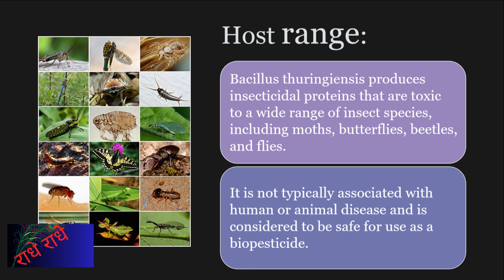Bacillus thuringiensis, or Bt, is an insecticide that has been found to be effective against moths, butterflies, beetles, and flies. It produces a protein that is toxic to the insects, yet does not pose a risk to humans or animals. This makes Bt a desirable choice when seeking to use biopesticides.